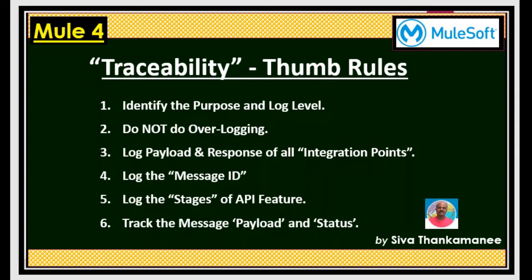Number five: you need to log the status of API features. Suppose you are calling many integration points like database or external web services — you need to log whether that particular call succeeded or failed. That's very important to know the status of every integration point. Number six: you need to track the message payload and status somewhere, because referring to console logs will be good but it's critical to have some consolidation like a database table where you can look at the statuses as a bird's eye view, instead of going through a console that contains 10 GB of logs. Tools like Splunk can have a lot of logs but it will be difficult to isolate onto a specific transaction. So it's always better to track the message payload and status in a database table.